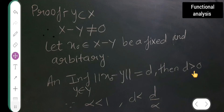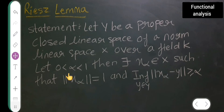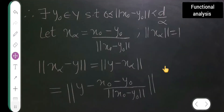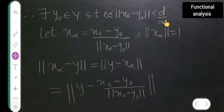Then d is greater than 0. Since α is less than 1, we have d is less than d upon α. Therefore, there exists y₀ belonging to Y such that 0 is less than or equal to the norm of x₀ minus y₀, which is less than d upon α.